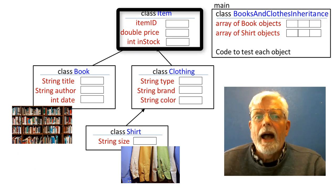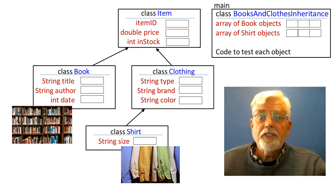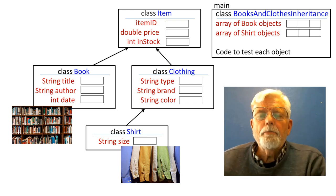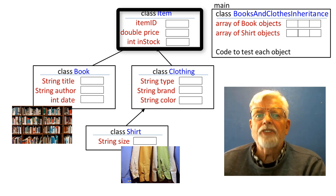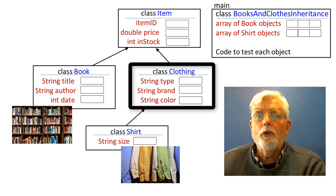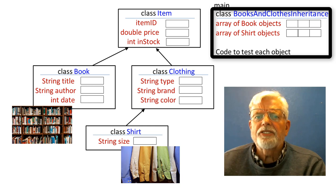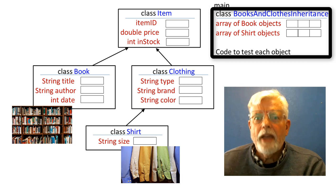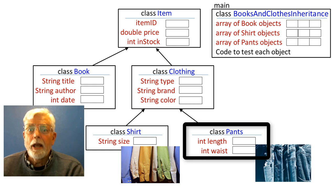I am providing five files for you: BooksAndClothingInheritance.java, Item.java, Book.java, Clothing.java, and Shirt.java. This diagram shows the name and type of each member data. It also shows the inheritance tree, starting at the top with the class Item and its subclasses Book and Clothing. Shirt is inherited from Clothing. The BooksAndClothingInheritance class has an array of book objects and an array of shirt objects, and code to test and display information from each. The diagram is being updated to show the pants class definition — this is what you need to complete for the lab project.